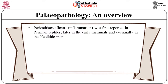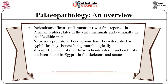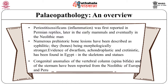Periostification or inflammation was first reported in Permian reptiles, later in the early mammals and eventually in Neolithic man. Numerous prehistoric bone lesions have been described as syphilitic, the bone being morphologically stronger. Evidence of dwarfism, achondroplasia and cretinism has been found in Egypt in skeletons and statues. Congenital anomalies of the vertebral column — that is, spina bifida — and of the sternum have been reported from the Neolithic of Europe and Peru.